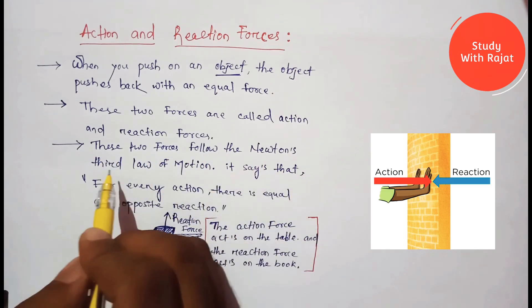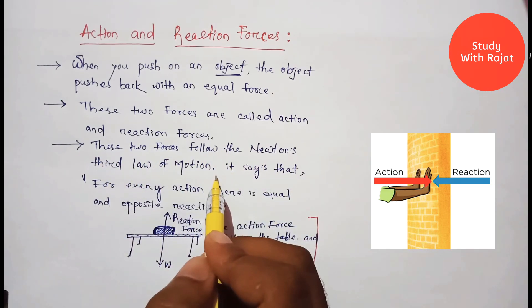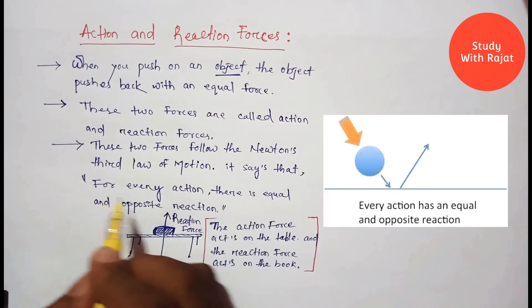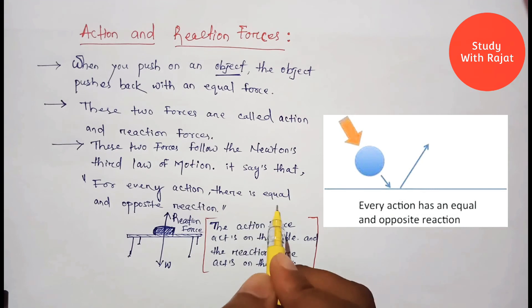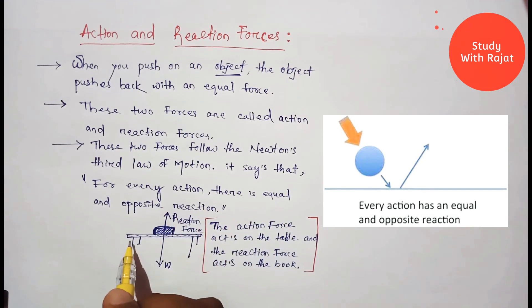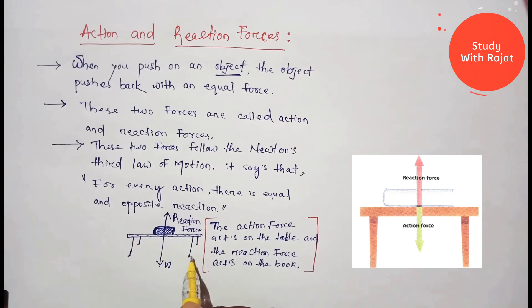These two forces follow Newton's third law of motion. What does Newton's third law of motion say? It says that for every action, there is an equal and opposite reaction. So here you can see there is a table, and on the table a book is there.